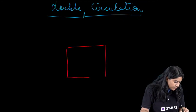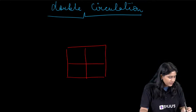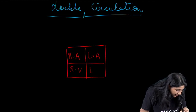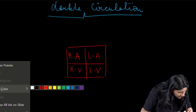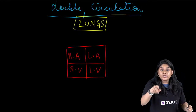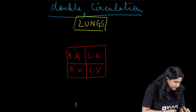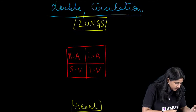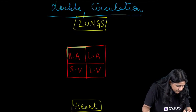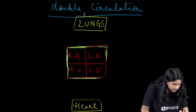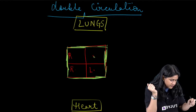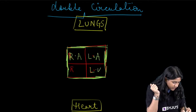Just for our understanding purpose — please remember you should not draw this simplified diagram in your examination. We have right atrium, left atrium, right ventricle, and left ventricle. We also have the lungs. White color represents oxygen-rich blood.